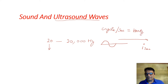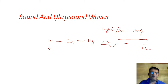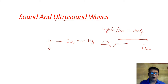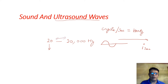On the basis of frequency, you can divide sound into two categories: audible sound and inaudible sound. Ultrasound waves are inaudible sound, while ordinary sounds are audible sound, and their frequency lies between 20 and 20,000 Hertz.